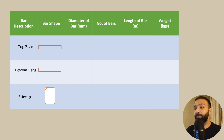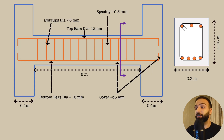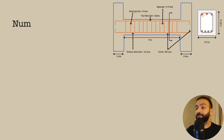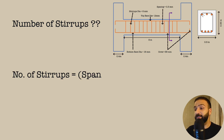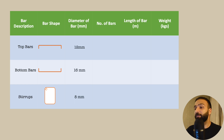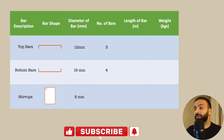The next column to fill is the diameter of the bars. The diameter of the top bars is 12 millimeters, the bottom bars is 16 millimeters, and the stirrups is 8 millimeters. For the number of bars, the top bars is 3 and the bottom bars is 4. For the number of stirrups, the formula is total span divided by spacing plus 1, which is 8 divided by 0.3 plus 1, giving us approximately 28 stirrups.